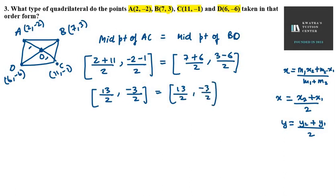On the other side, you have again 13 over 2 and minus 3 over 2. You can see that on both sides, the midpoint is the same. So if the midpoint is the same, that means ABCD is a parallelogram.